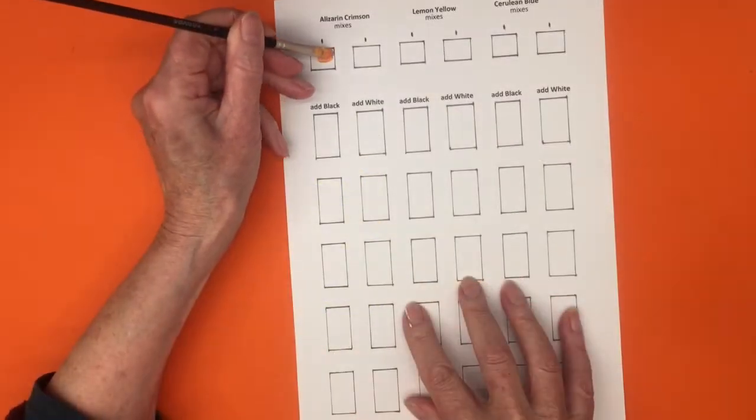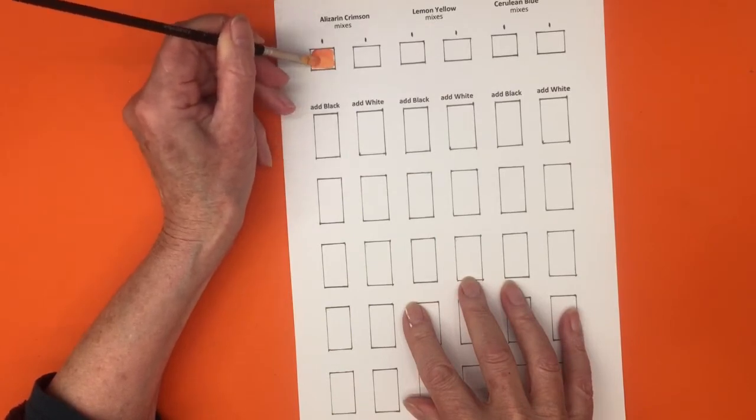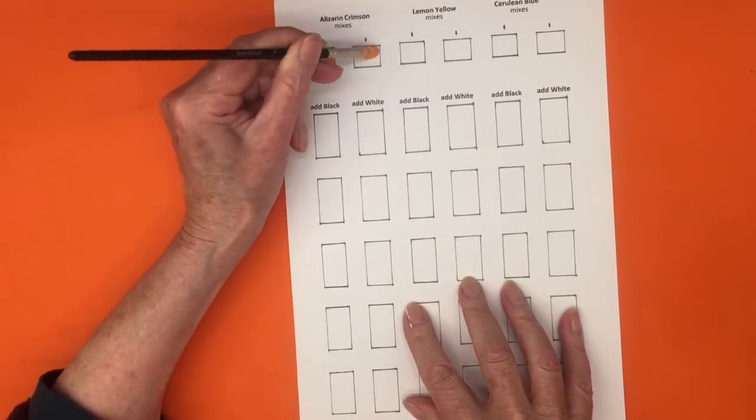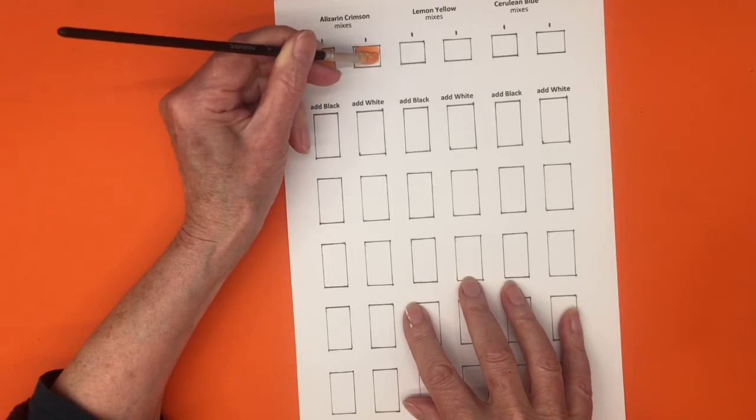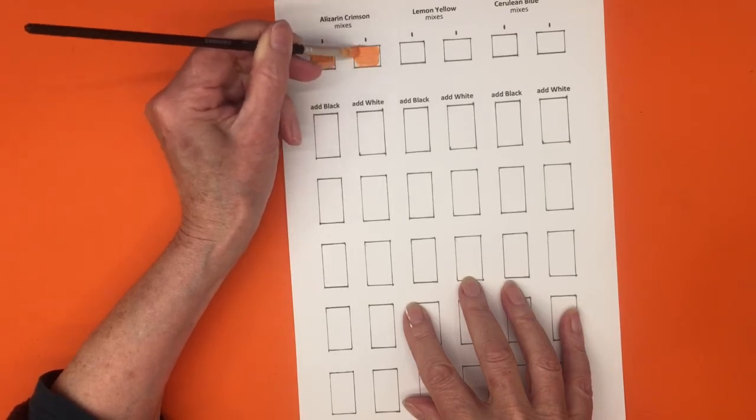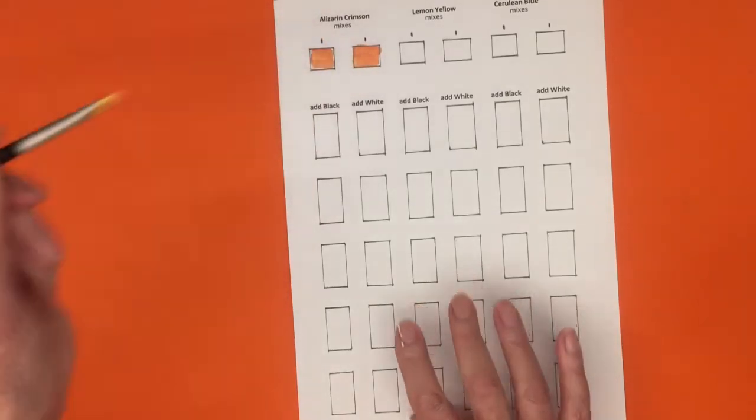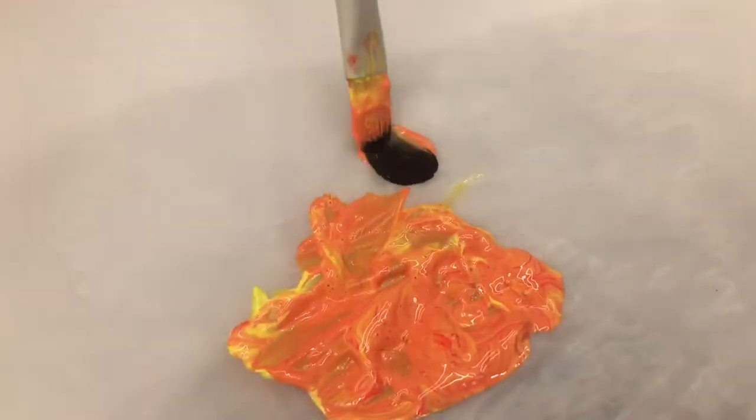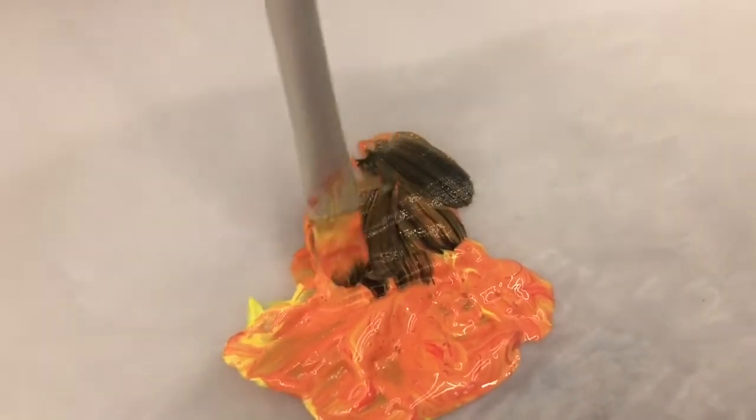Now we will be using the three cool primary colors. These mix together are much brighter than the warm primaries. Take some of the middle orange mixed with the cool primary colors and paint that in the top two boxes.